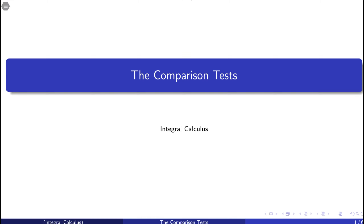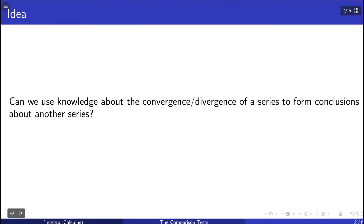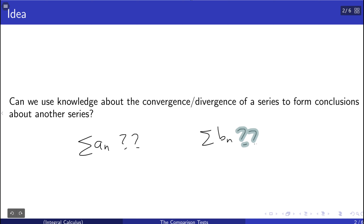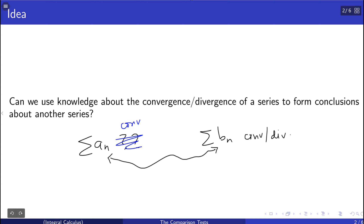In this video we'll talk about the comparison tests, which are another set of tests that help us tell whether a series is convergent or divergent when we know something about the convergence behavior of another series. You have a series a sub n which you're trying to figure out whether it converges or diverges. If we have another series b sub n for which we know it's convergent or divergent, and we know there is some relationship between a_n and b_n, then maybe we can use that to say a_n is convergent or divergent.